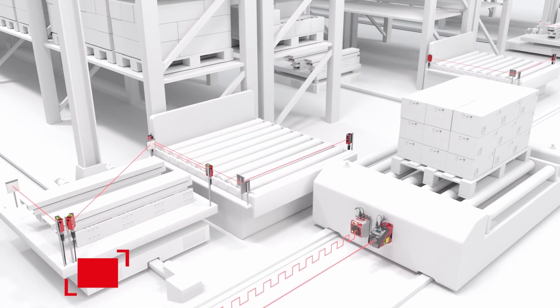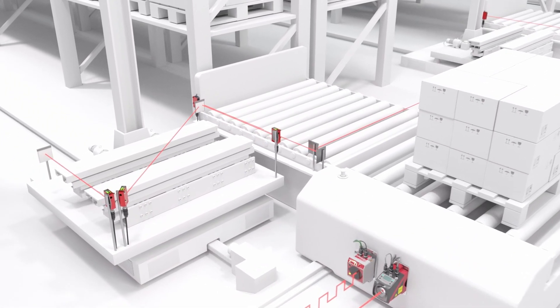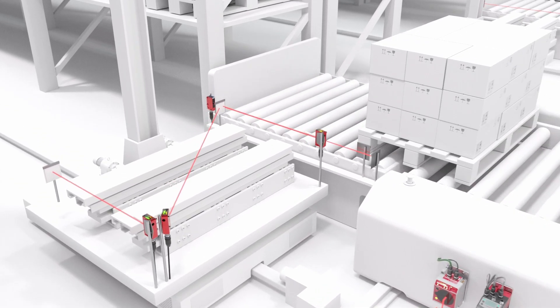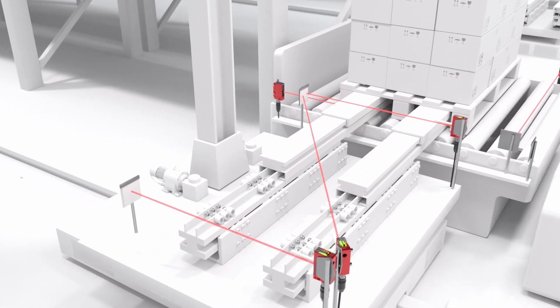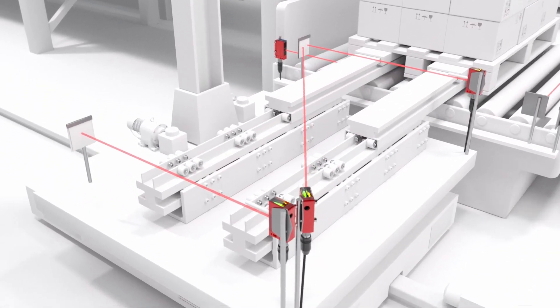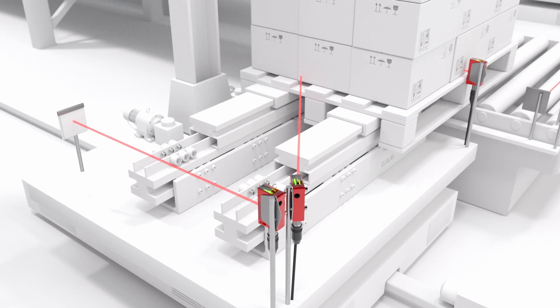To avoid collisions, it must be checked during pallet transfer whether the load handling device has completely unloaded or retracted the pallet. For this purpose, the optical sensors monitor the presence of the material at different positions.